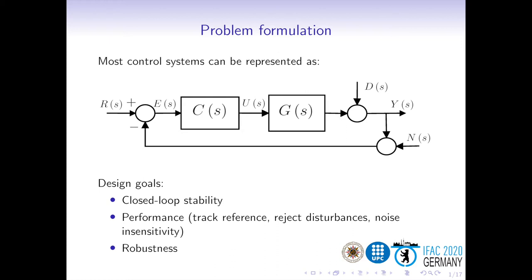In this work, the conventional control loop shown in the figure is assumed. As is the case in most control system design, the main goals are guaranteeing closed-loop stability, providing good performance which can be translated as tracking references, rejecting disturbances and being insensitive to noise. Finally, handling plant uncertainty is also a major concern.